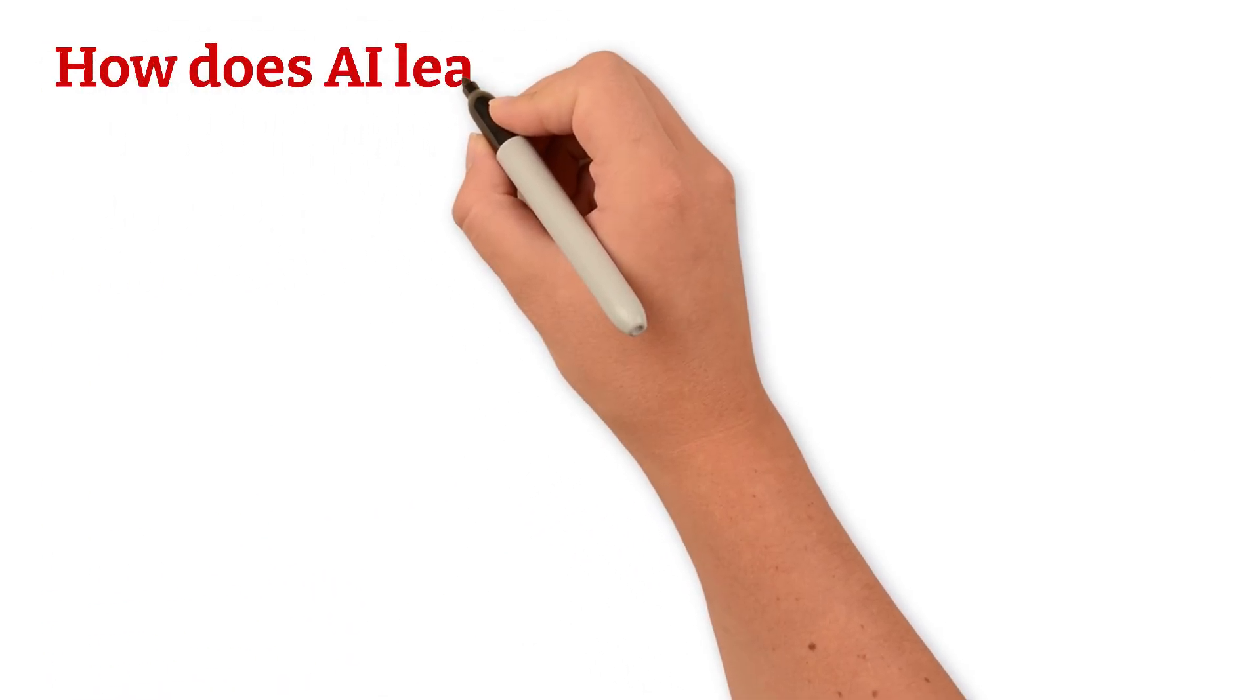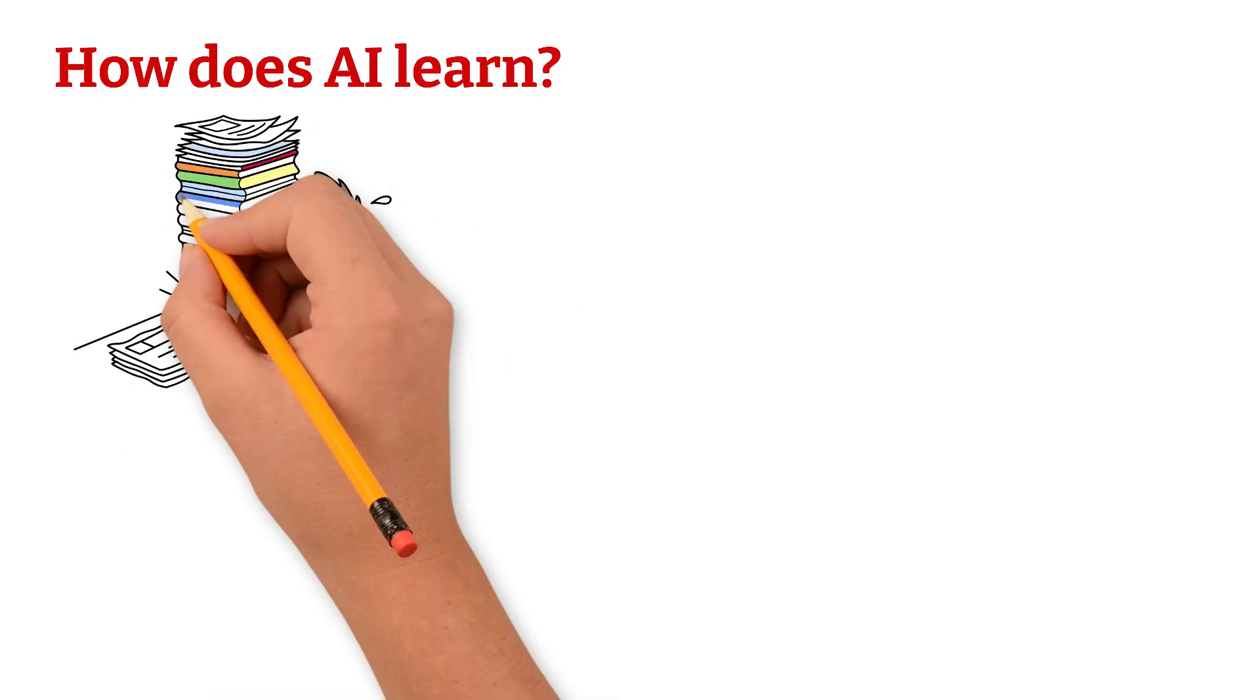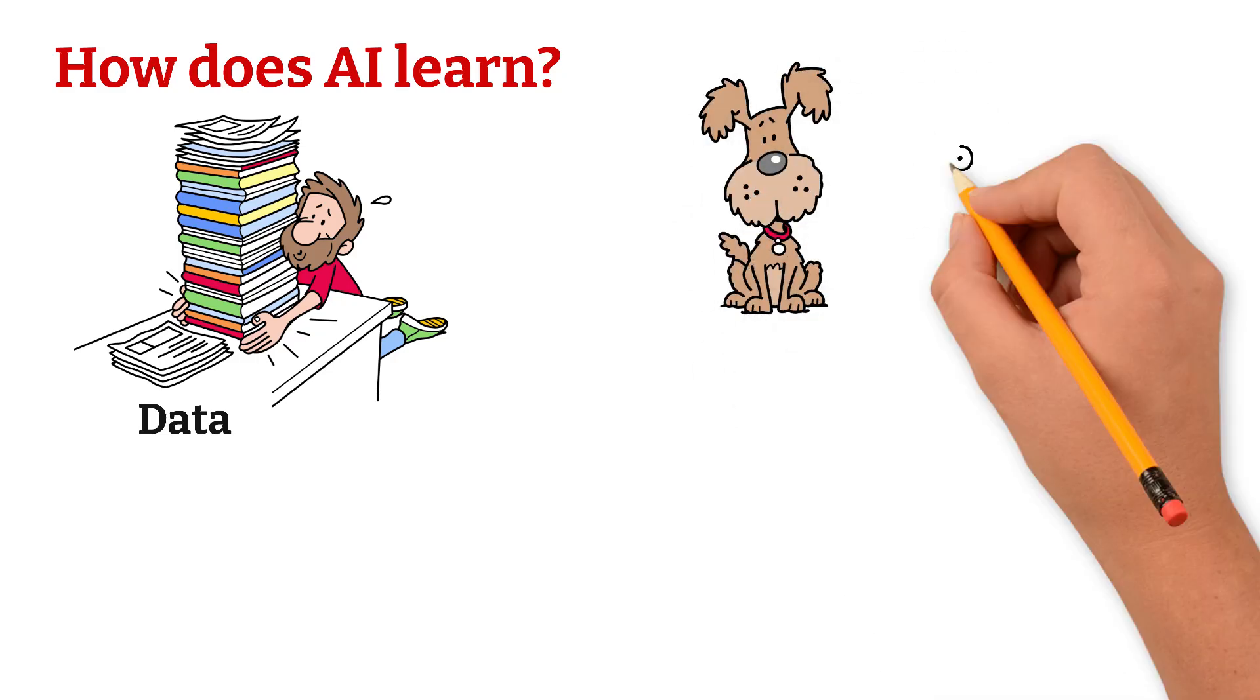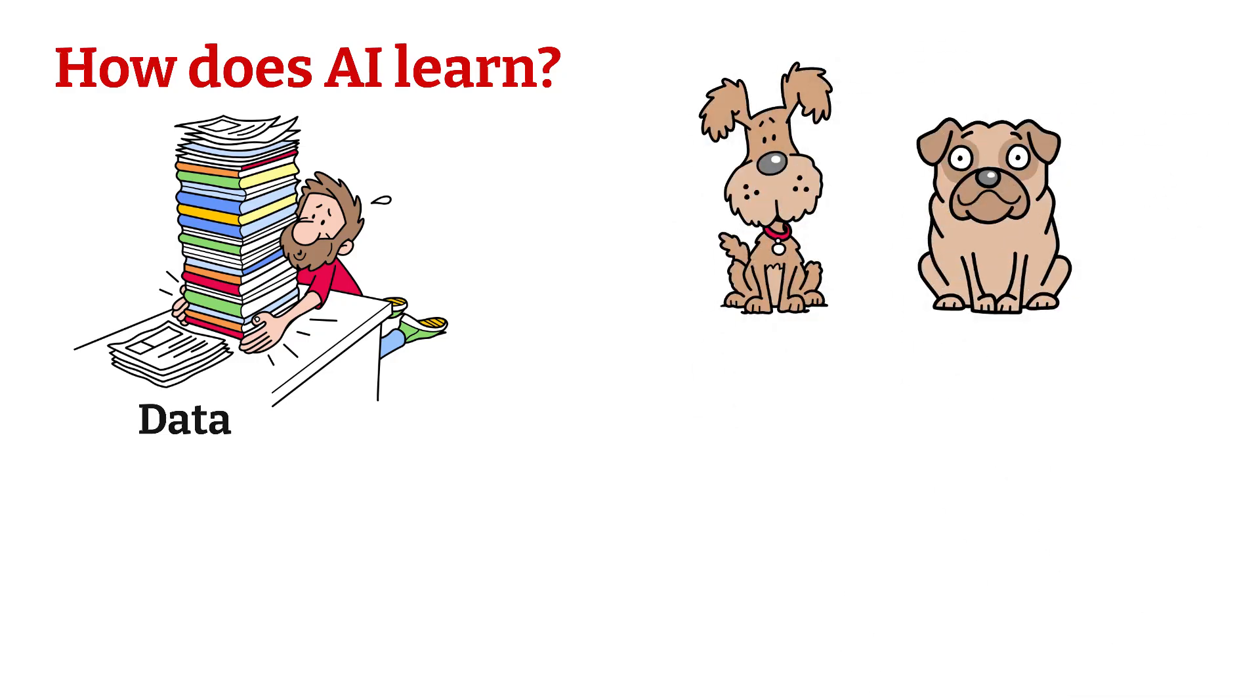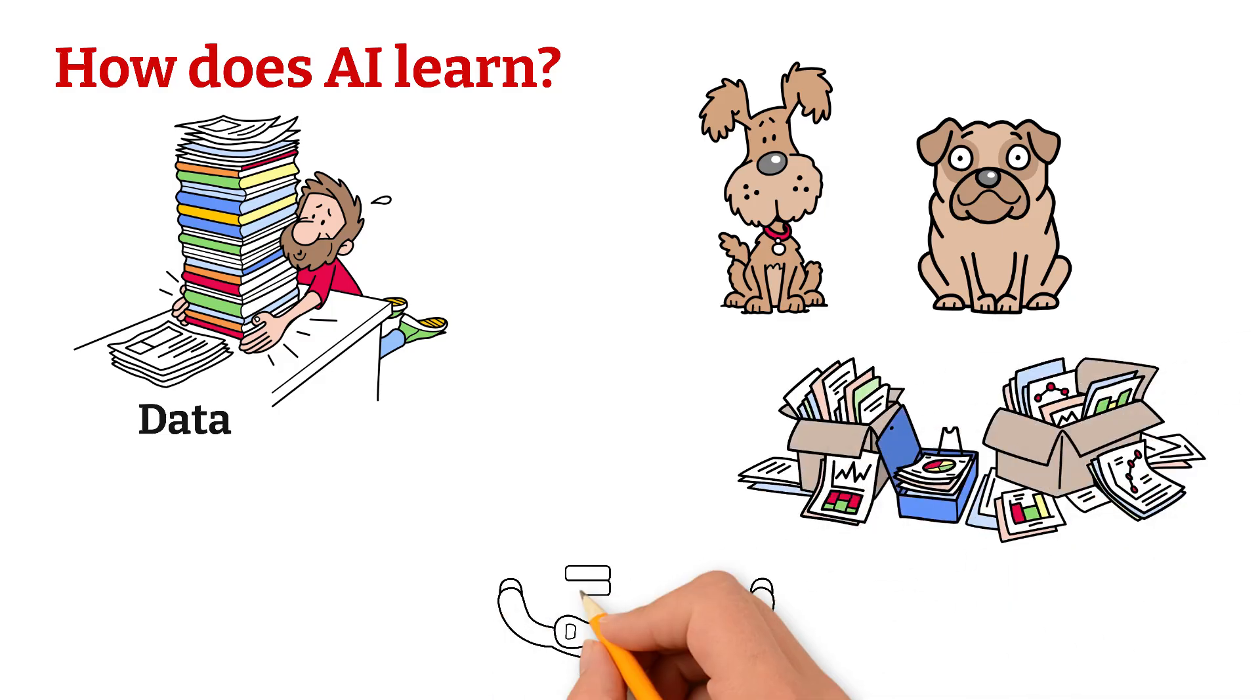How does AI learn? AI learns by looking at a massive amount of examples called data. Just like you learned what a dog looks like by seeing lots of dogs, AI learns by reading millions of pieces of text from books, websites, and articles.